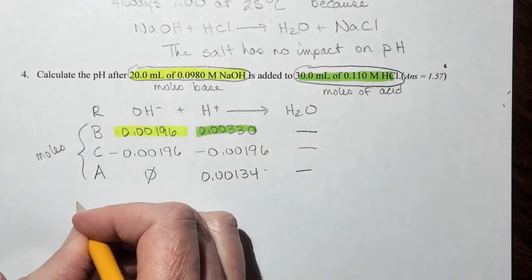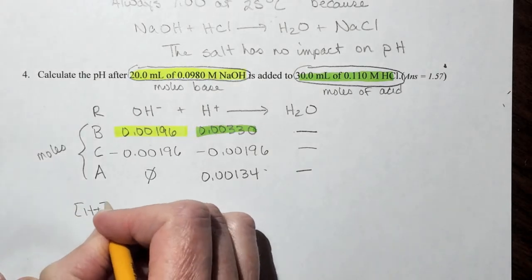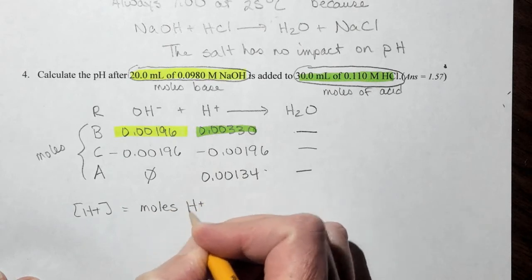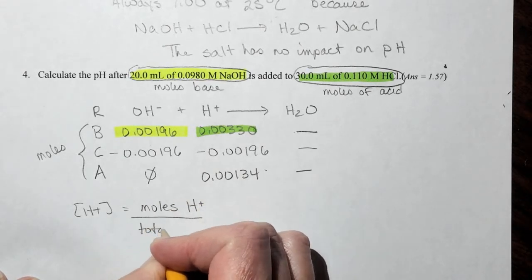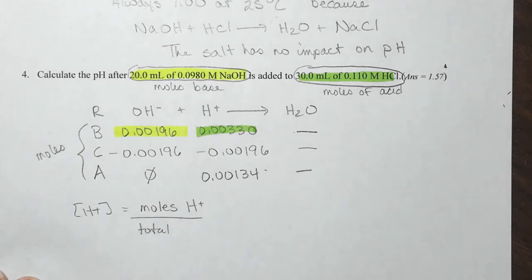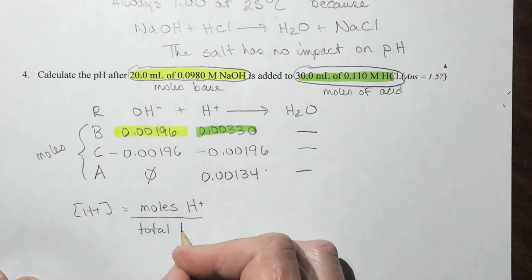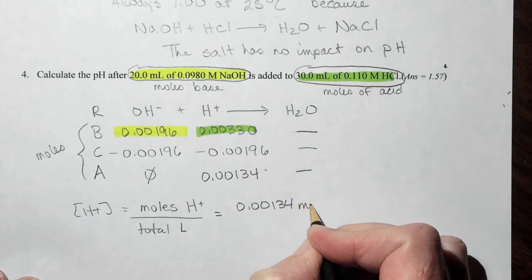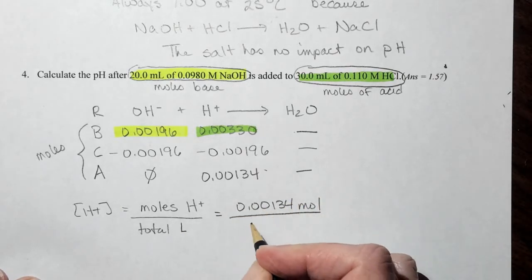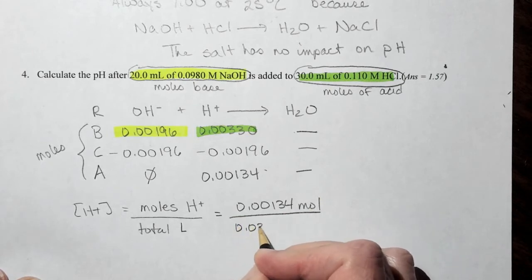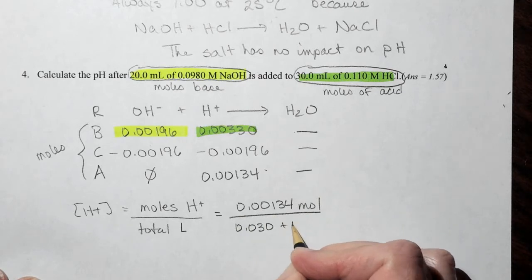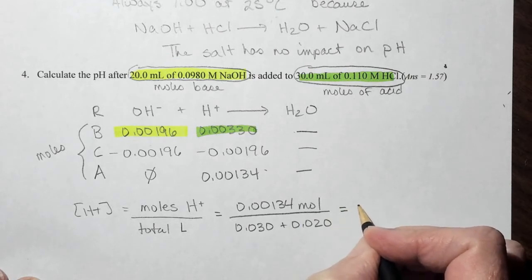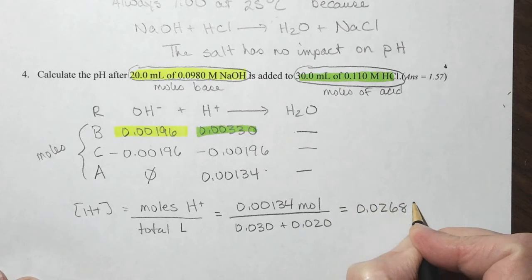Now in order to figure out the hydrogen ion concentration for pH we do need to know the molarity. So it's going to be moles of H plus divided by your total liters. Now you have to remember here to use your total liters. So that's going to be 0.00134 moles. And then we have volume from both the base and from the acid. So we had 0.030 liters of the acid plus 0.020 liters of the base. And we go through the calculation and that's 0.0268 molar.